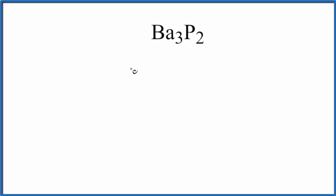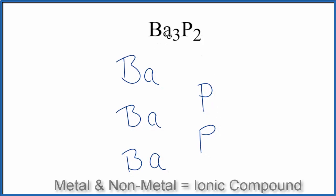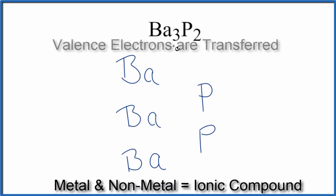So let's first just write the barium atoms. We have three of those, and then our two phosphorus atoms. Since barium is a metal, phosphorus is a non-metal, we're going to transfer electrons from the metal to the non-metal.